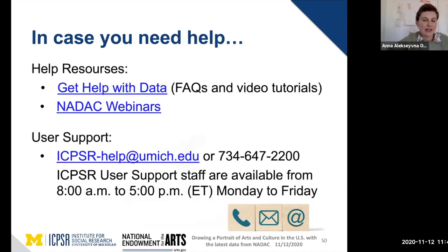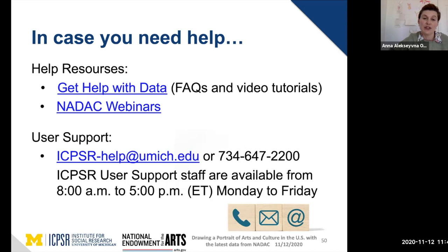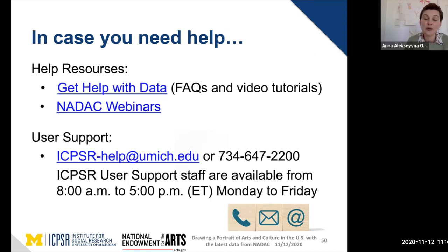In conclusion, here are the available help resources on our site. The links in your slides will take you to FAQs and video tutorials, as well as past NAIDAC webinar recordings. For user support, you can reach our professional staff with any questions about NAIDAC data, how to use our website, understanding research data, or archiving with NAIDAC. Our email is icpsr-help@umich.edu or call us at 734-647-2200.